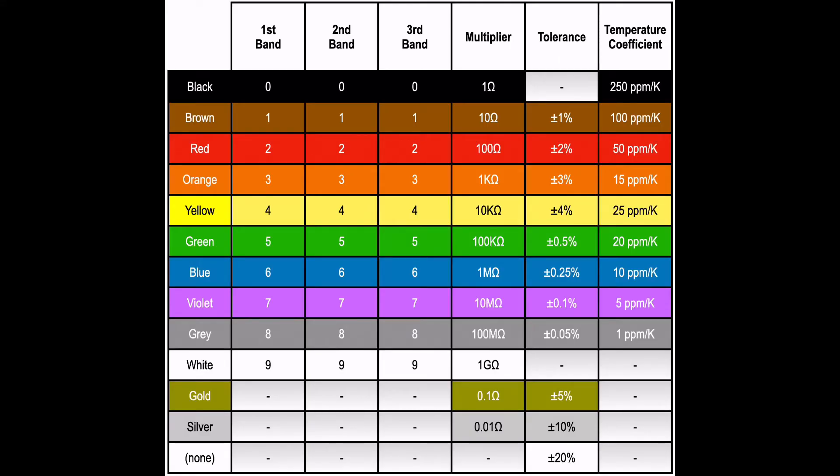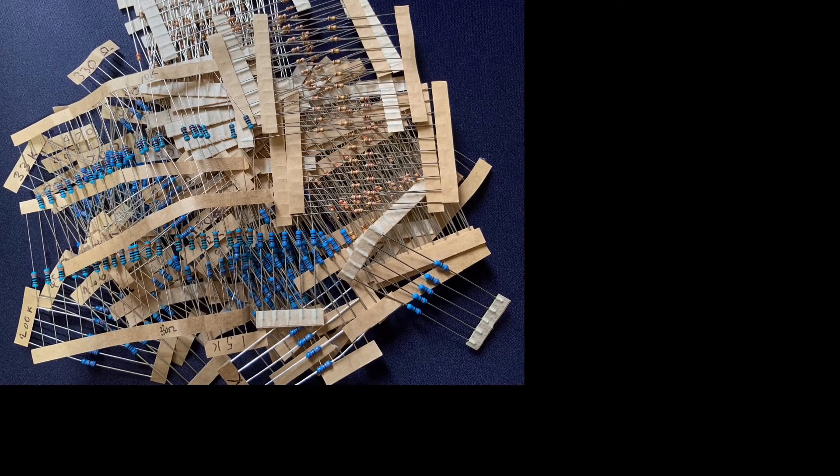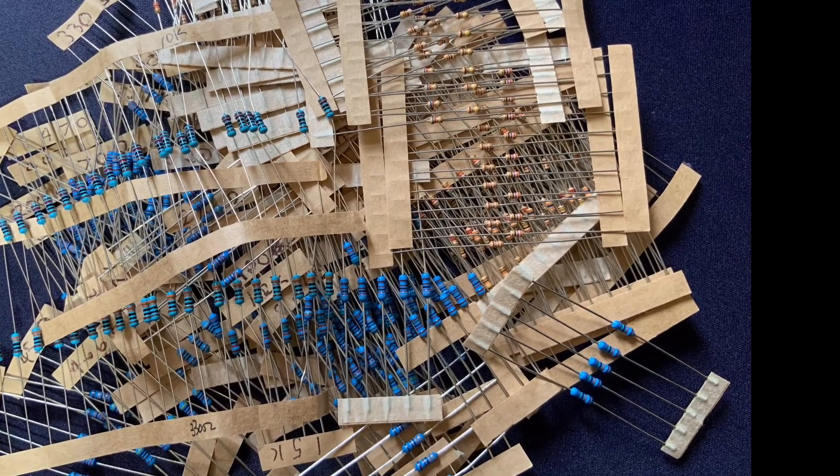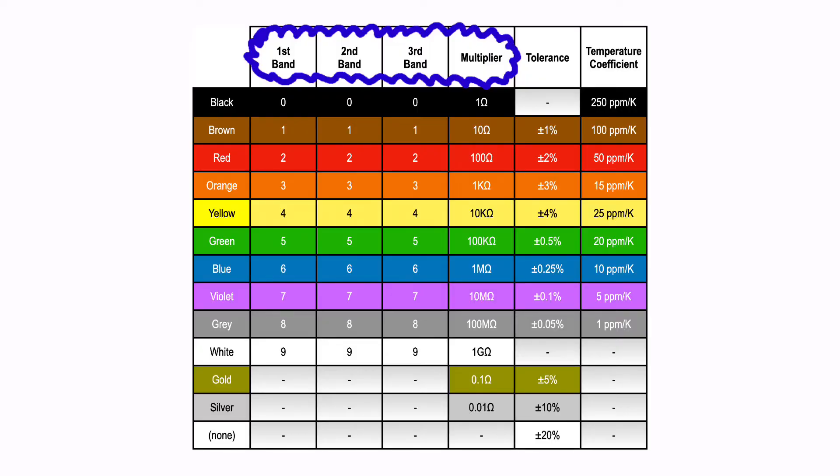The colored bands on a resistor can tell you everything you need to know about its value, as long as you understand how to read them. Resistors like these can have three, four, five, or even six colored bands, each of which are used to denote the resistance value in ohms, the tolerance, which basically tells us how accurate or precise that value is. And on some resistors, we can also glean something called the temperature coefficient. We can also determine things like the power rating based on the physical size of the resistor itself.